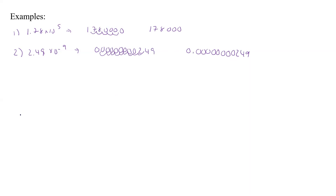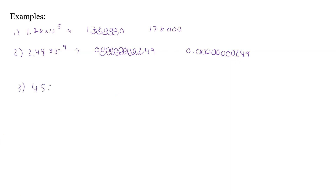Now let's say we have a number to start with and want to go to scientific notation. Say we have 457,800,000. Our decimal point is at the end, and we need to get it to a position where we have a number between 1 and 9. We move it 1, 2, 3, 4, 5, 6, 7, 8 places. So we get 4.578 times 10, and since we have to move it 8 spaces to the right to get back to the original number, it's a positive 8 — giving us 4.578 times 10 to the 8th.